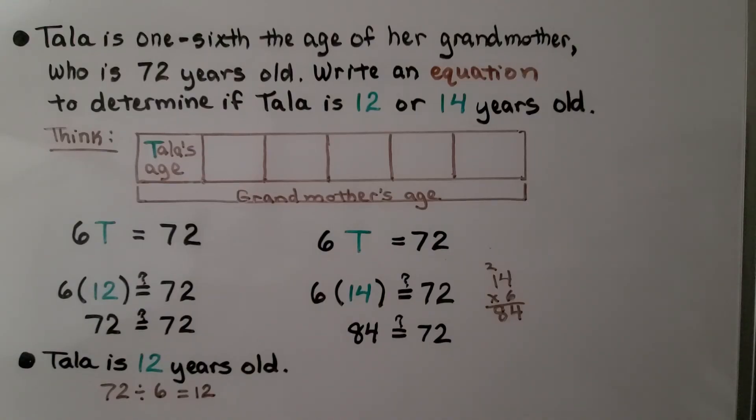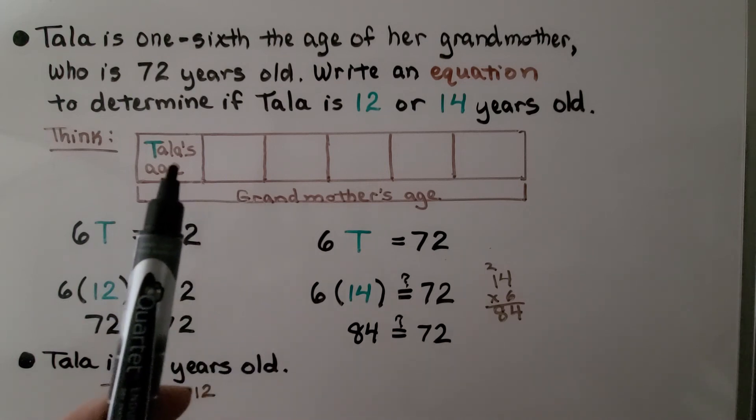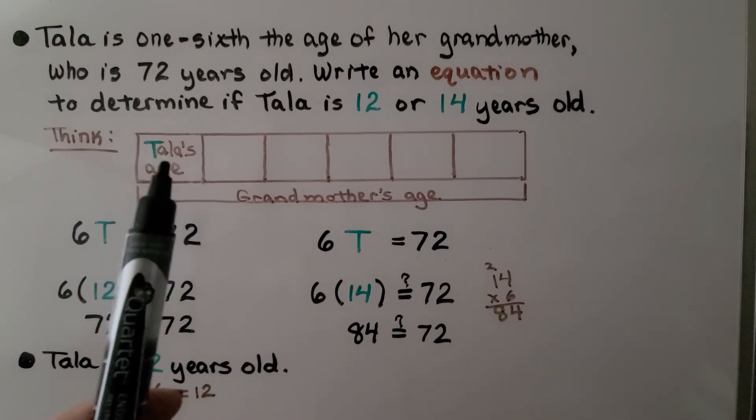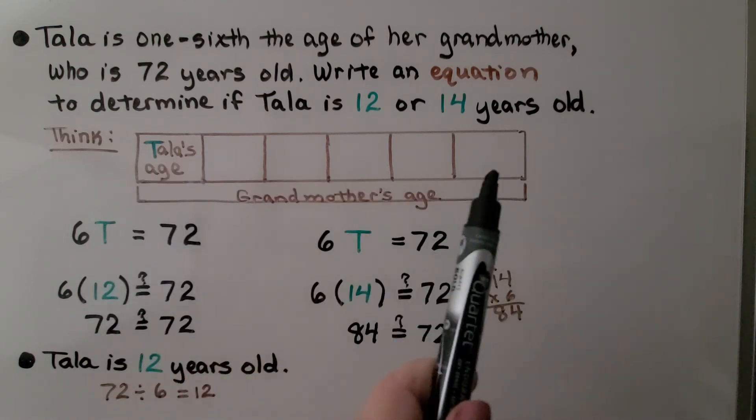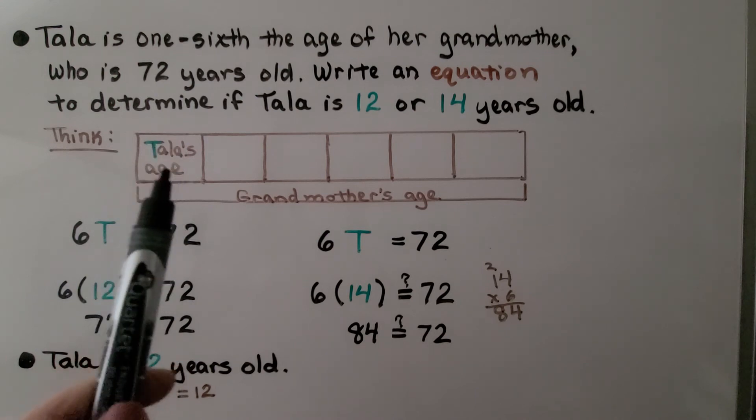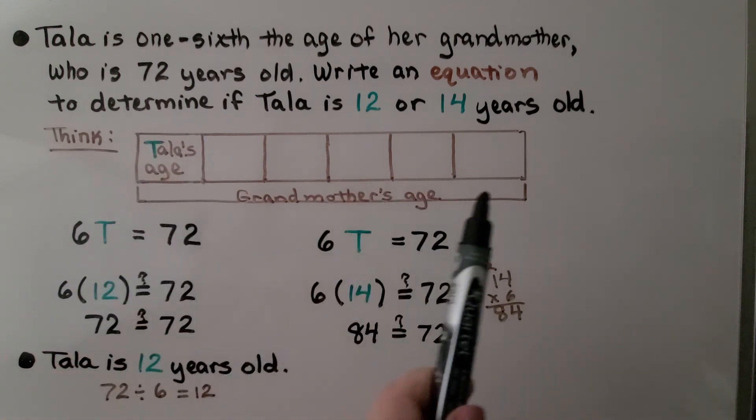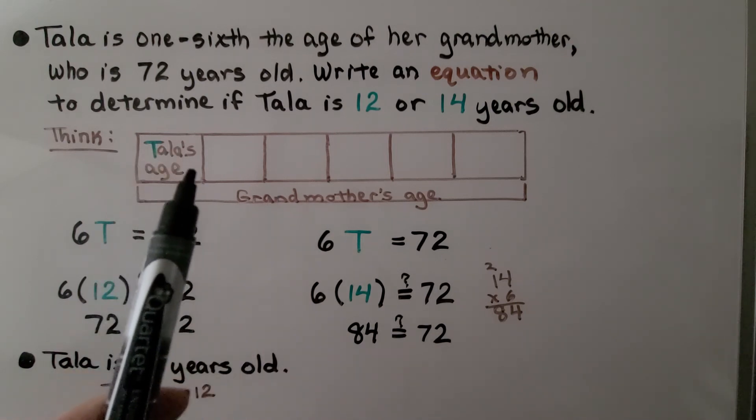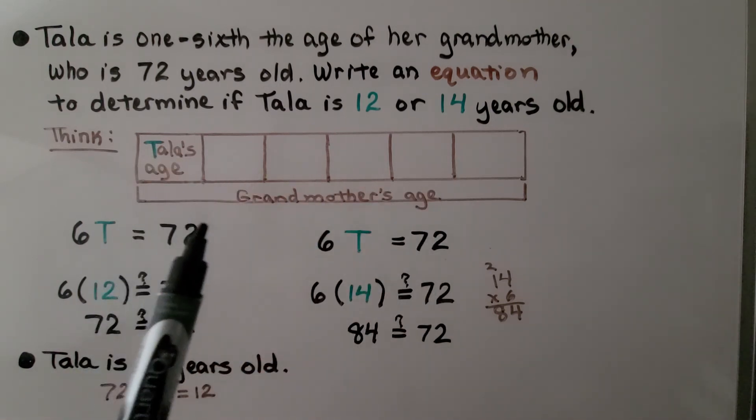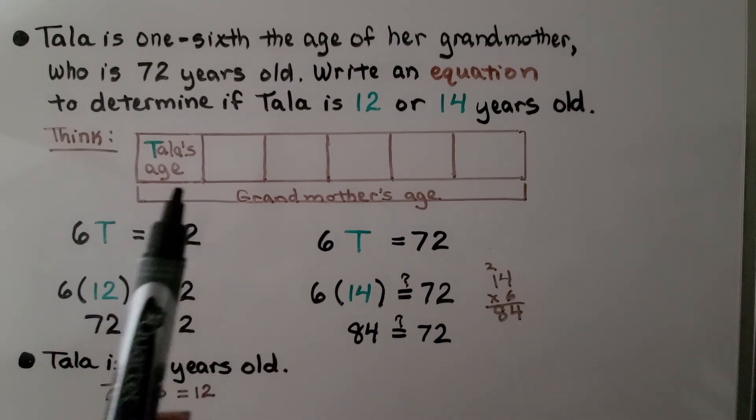Tala is one-sixth the age of her grandmother, who is 72 years old. Write an equation to determine if Tala is 12 or 14 years old. So, we can draw a quick model and think, well, she's one-sixth the age of her grandmother. We can make a rectangle and split it into six parts. She's one-sixth of that. And the entire length would be the grandmother's age, the 72 years old. That means six times Tala's age is going to equal the grandmother's age because we have six of them.